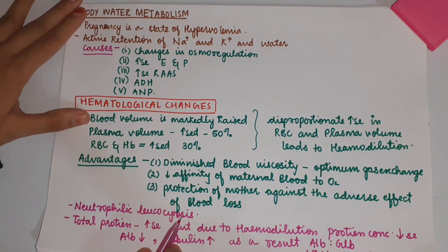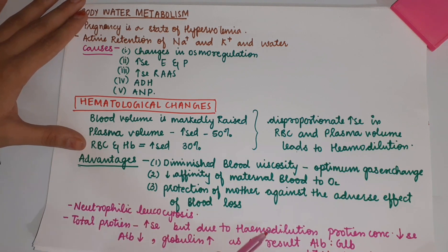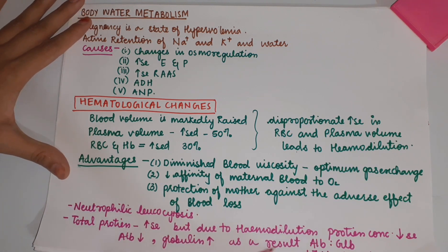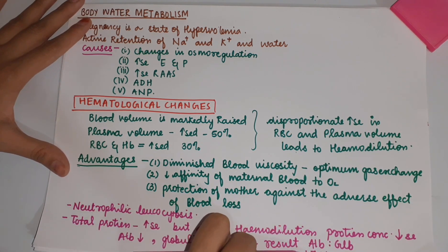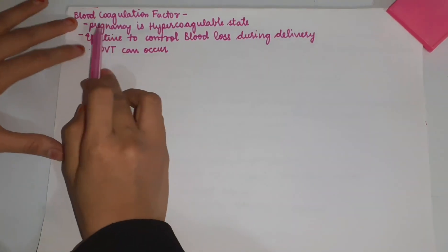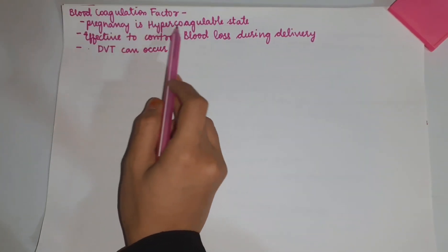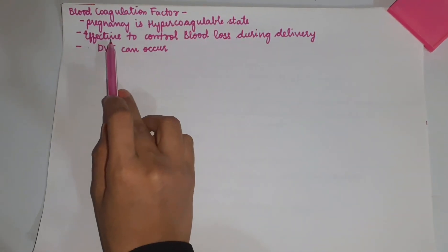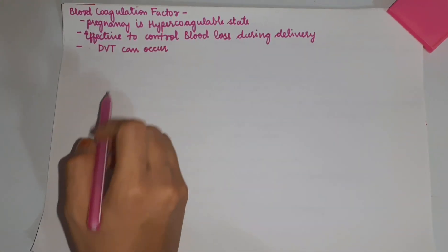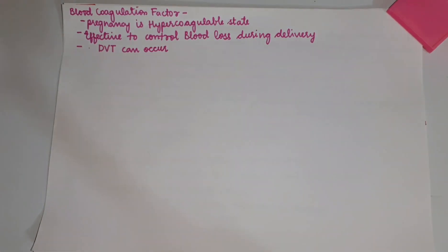Neutrophilic leukocytosis occurs. Total protein increases, but due to hemodilution, protein concentration decreases. Albumin decreases and globulin increases. As a result, the albumin-to-globulin ratio, which was initially 1.7:1, becomes 1:1. Regarding blood coagulation factors, pregnancy is a hypercoagulable state, which is effective in controlling blood loss during delivery, but its adverse effect is that it can lead to DVT.